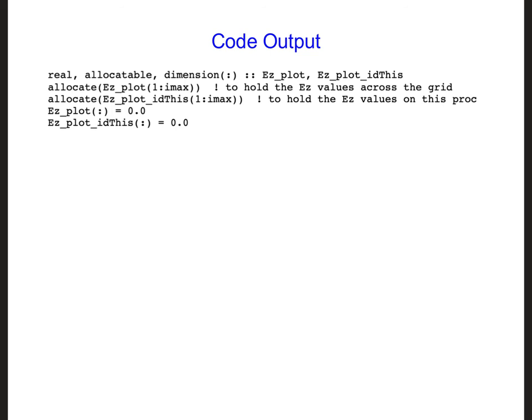To do this, we should first create an array that is large enough to store all of the EZ components. We'll call this EZ_plot. Then we need to create a second array that is the same size as EZ_plot. Let's call this EZ_plot_idthis.